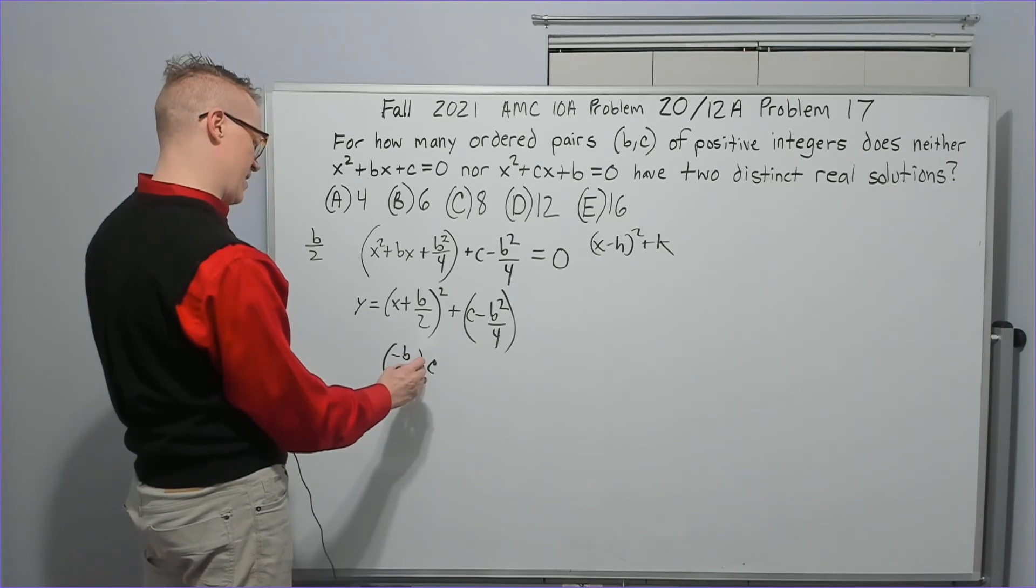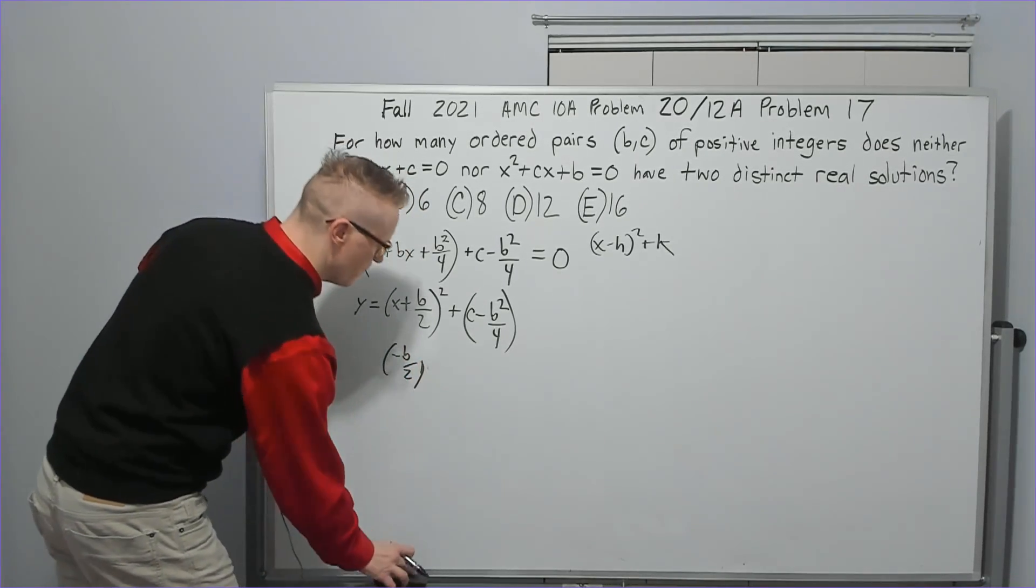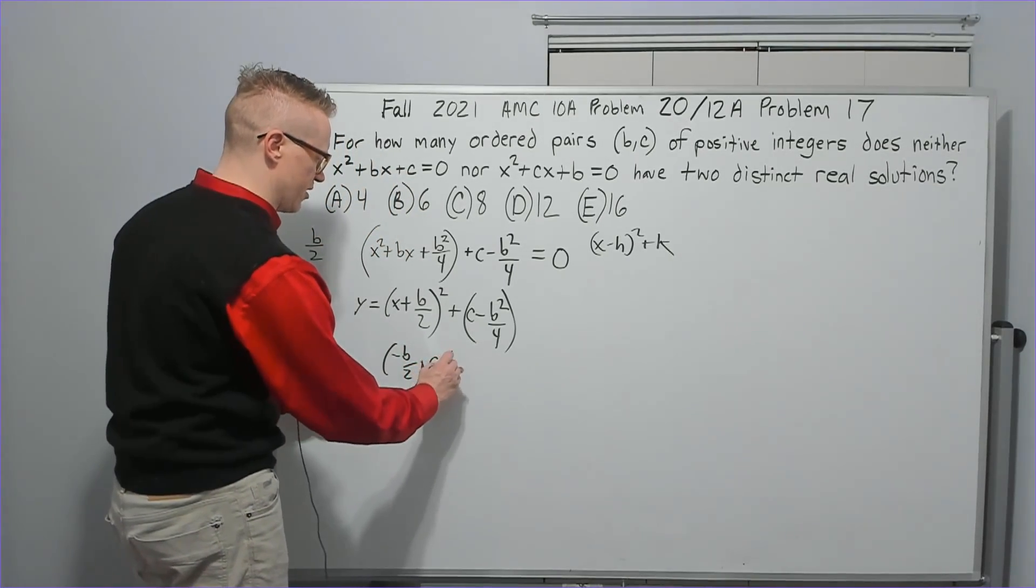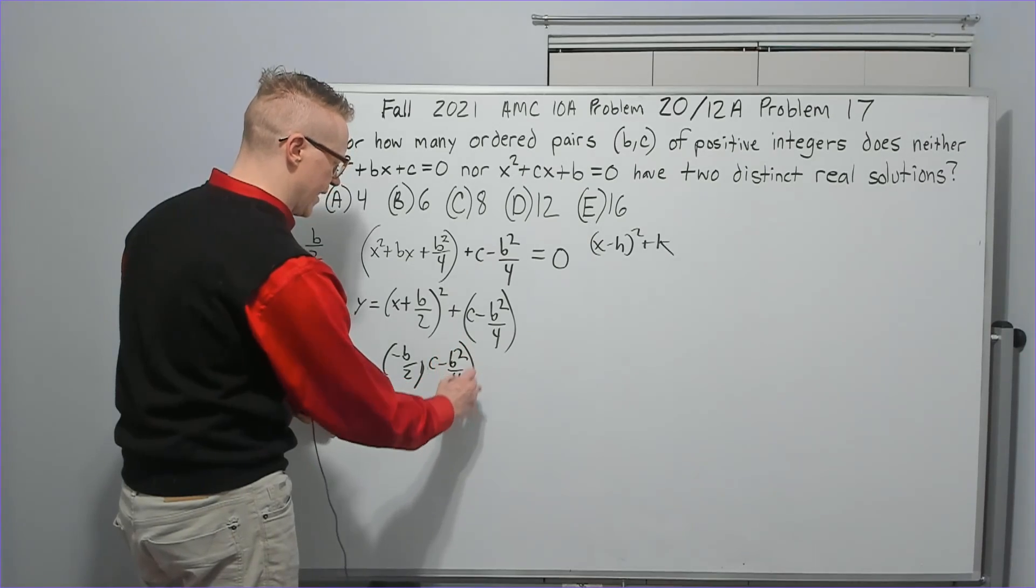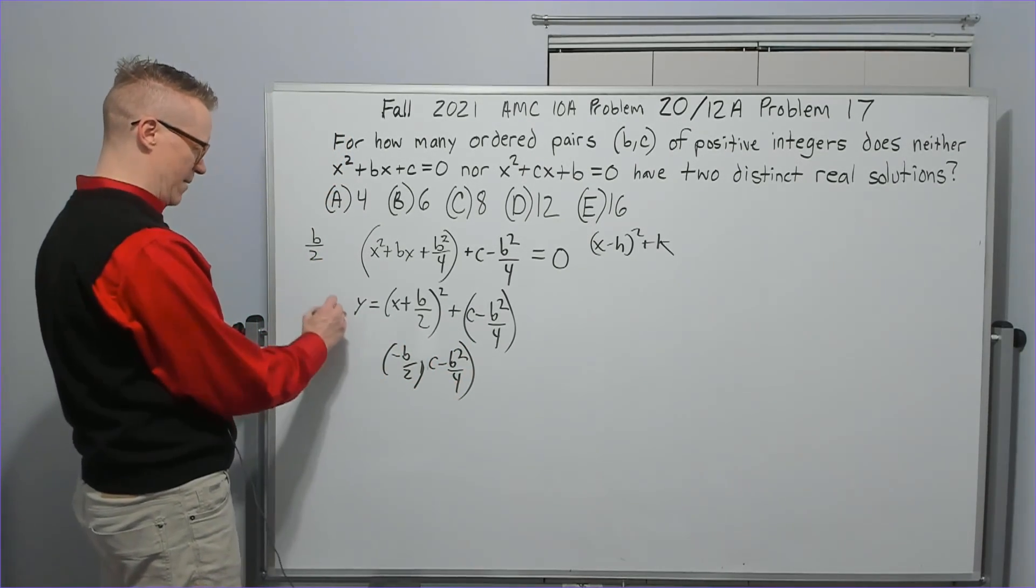So I've got c minus b squared over 4. Okay, then what? Well, where do I want my vertex? We said it's a parabola facing up. If you can get it on the x-axis or above it, then you will only have one solution.